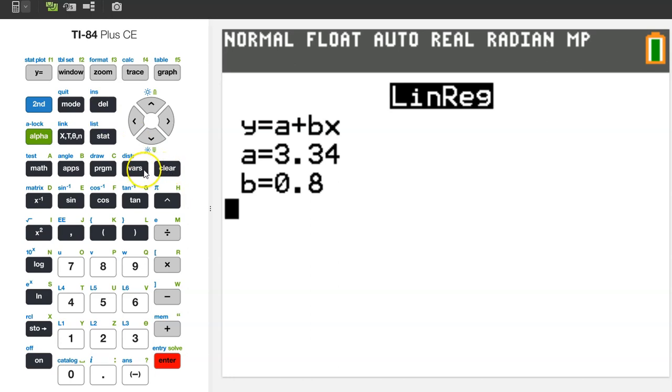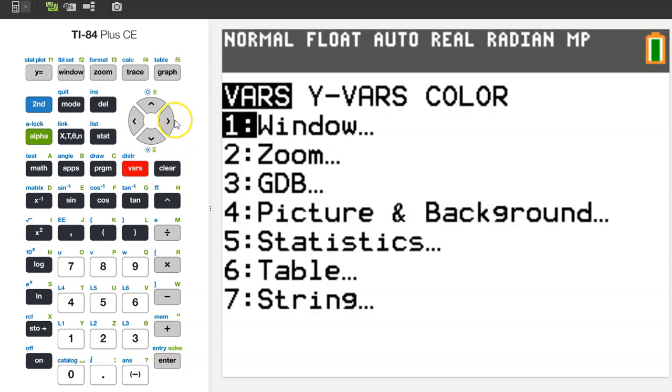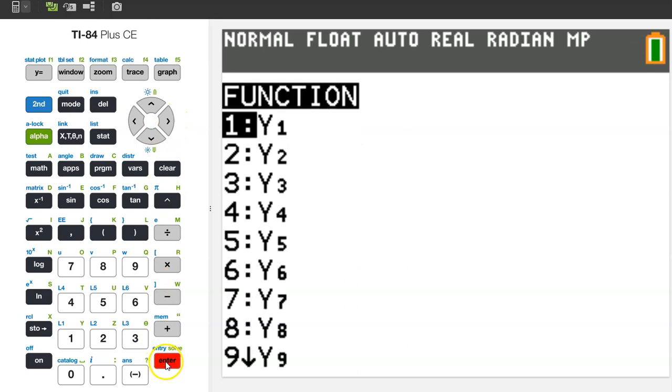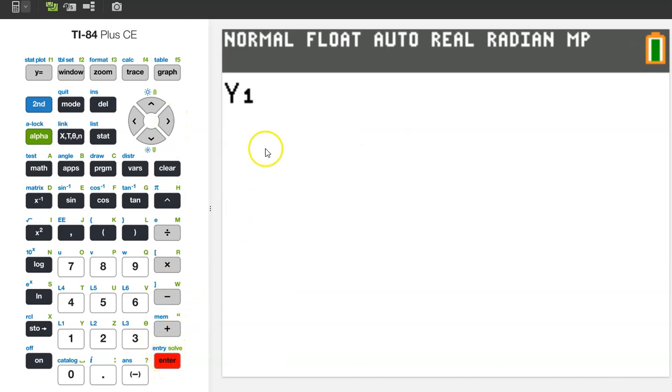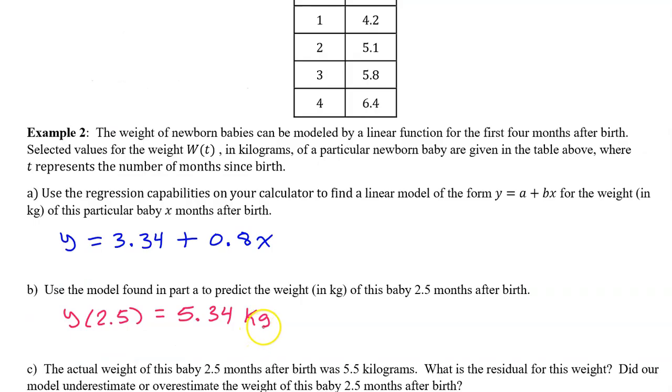To summon Y1, we hit VARS, switch over to YVARS, hit enter, hit enter again. To evaluate Y1 at 2.5, simply put 2.5 in parentheses right next to it. So, Y at 2.5 is 5.34. That is our predicted weight of the baby in kilograms. Always remember to include units.